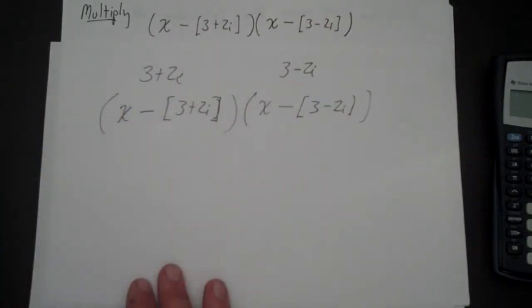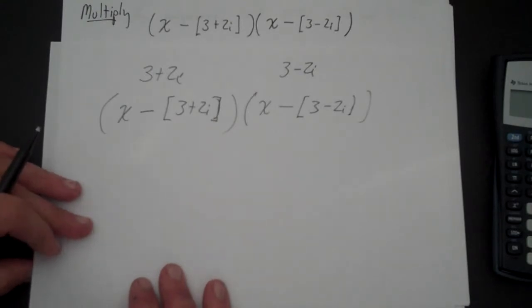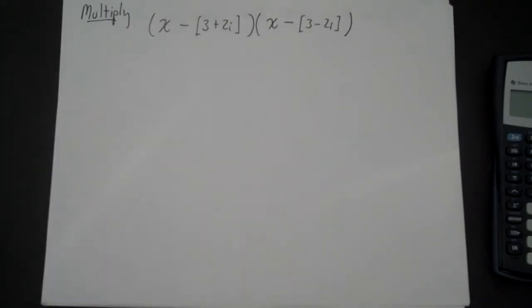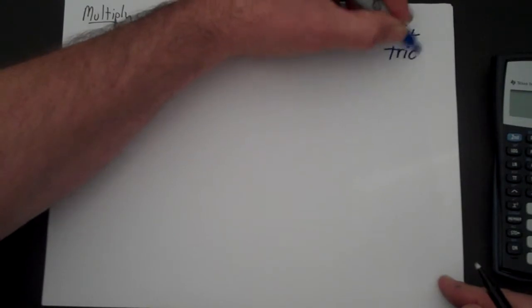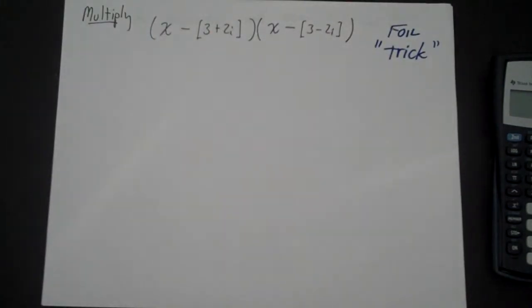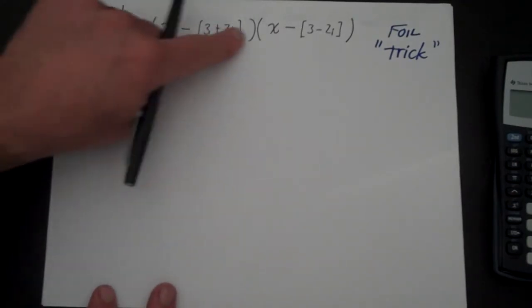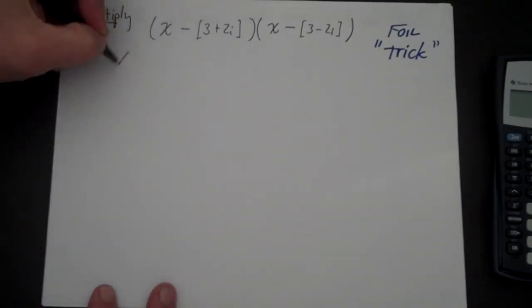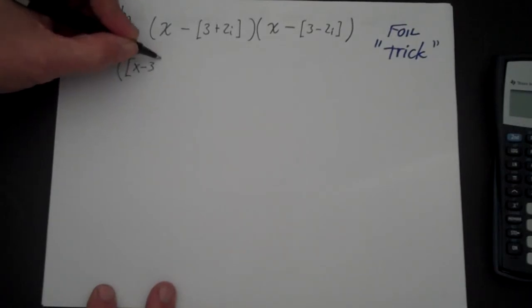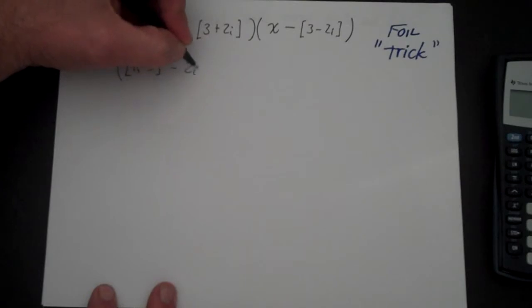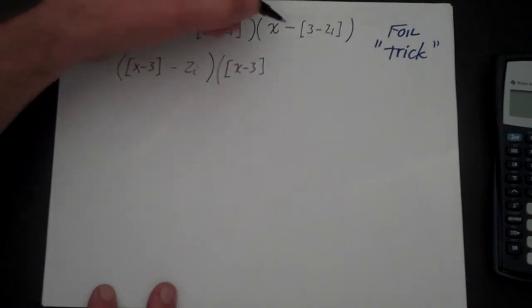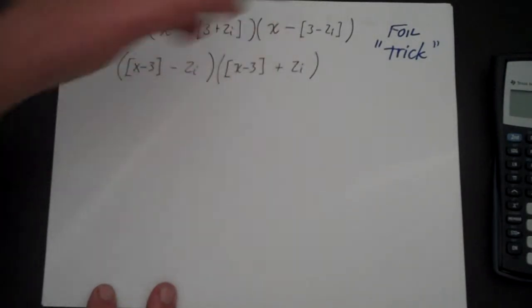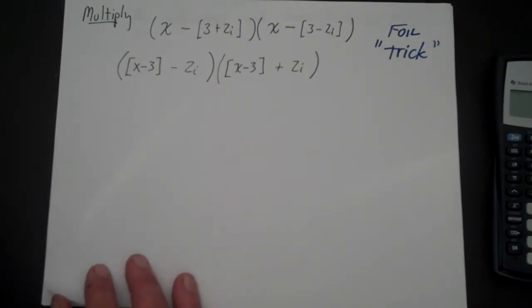We're going to FOIL that, and I'm going to show you a trick that will make it fairly easy. The first thing I want to do is rearrange these terms. I'm going to rearrange this so it's (x minus 3) minus 2i, and then (x minus 3) plus 2i. This is going to be a much easier problem because now these are complex conjugates of one another.